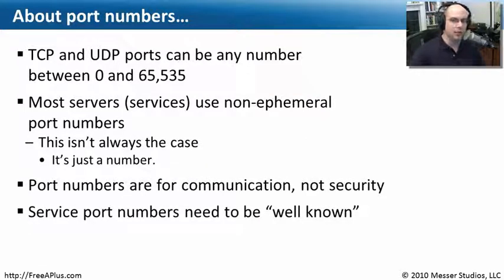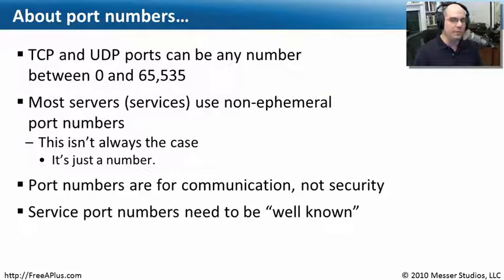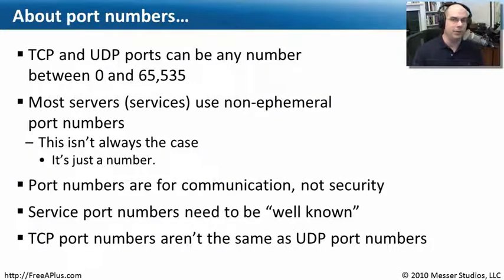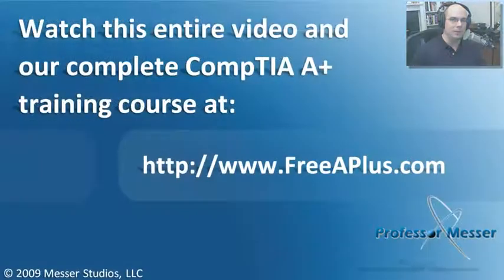To have our browsers communicate out to servers or our FTP servers communicate out to machines, we all need to agree on the same numbering scheme. That's why we have these common port numbers — everybody has created well-known port numbers for these applications. Also keep in mind that TCP and UDP are completely different protocols. They both use port number ranges between 0 and 65,535, but TCP port 80 and UDP port 80 are completely different things. Even though they share the same port number, TCP is in its own little world and UDP is in its own little world — you need to keep them separated in your mind.